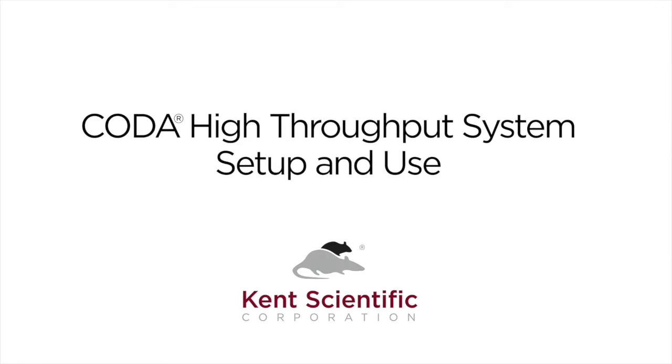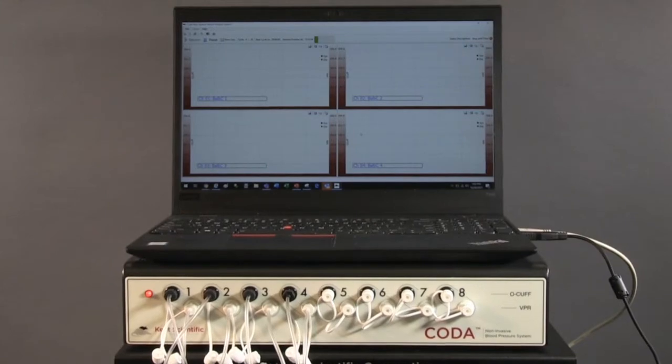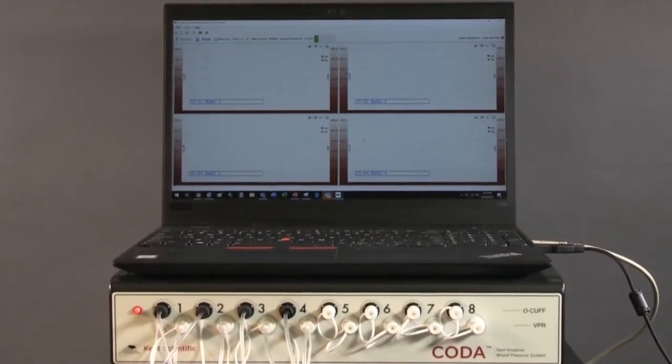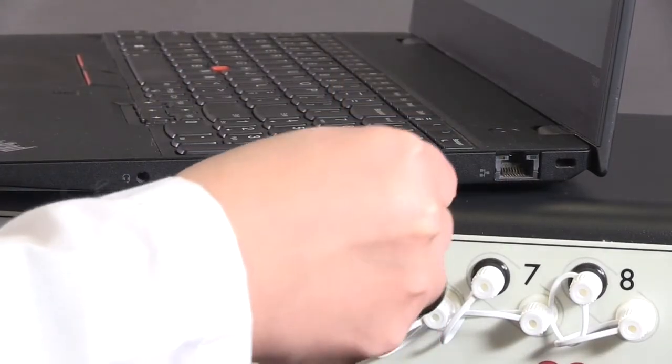The CODA high throughput systems include an easy-to-use software interface. To set up your CODA system, install the software onto your computer or laptop. Connect the CODA controller to the computer using the included USB cable.